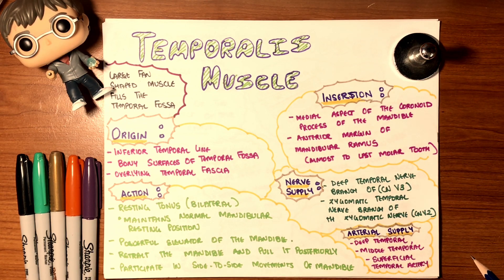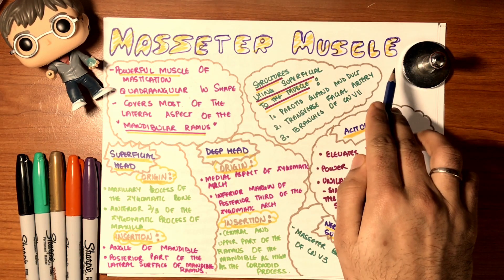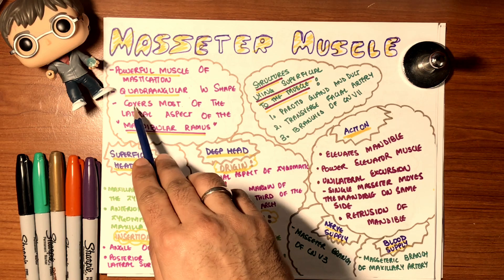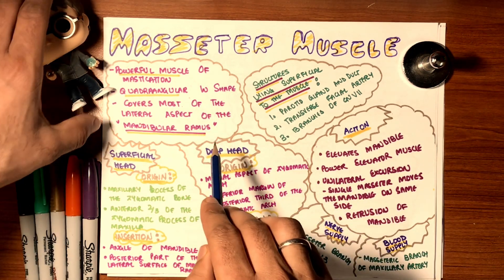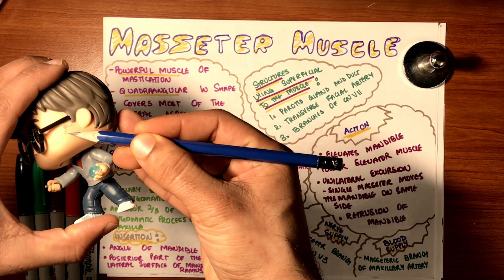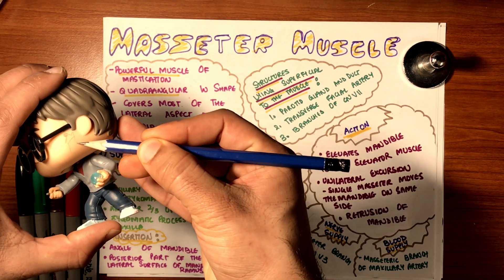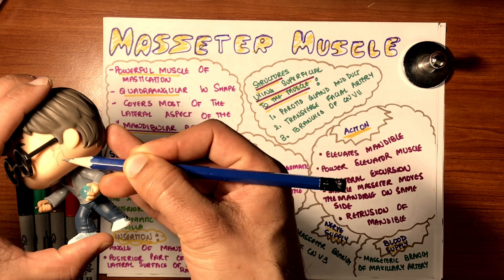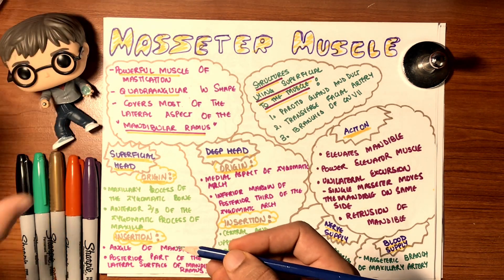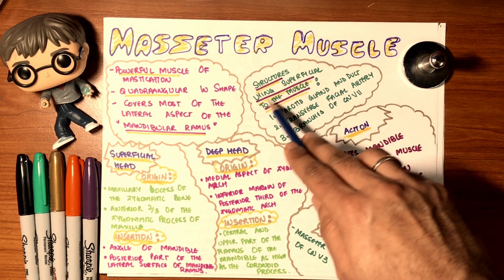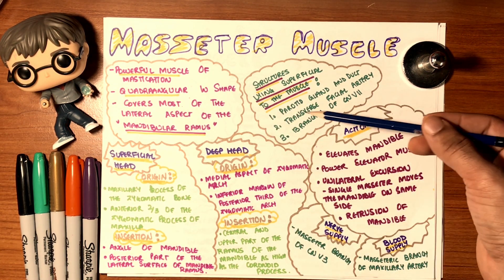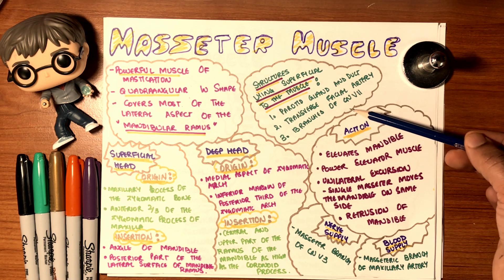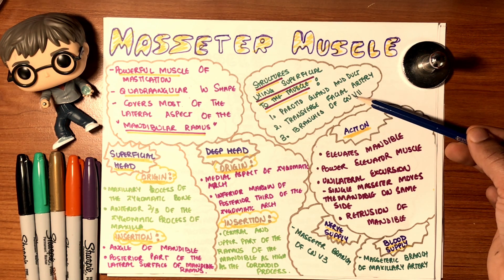The masseter muscle is a powerful, quadrangular muscle of mastication that covers most of the lateral aspect of the mandibular ramus. It is a very powerful elevator of the mandible. Structures superficial to the masseter include the parotid duct and gland, the transverse facial artery, and branches of cranial nerve 7, the facial nerve.